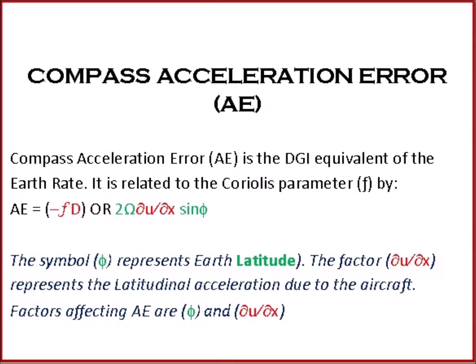The compass acceleration error (AE) is the DGI equivalent of earth rate. It is related to the Coriolis parameter F by: AE = −F·D, or equivalently 2ω · U_dx · sin(φ), where φ represents latitude and U_dx represents the latitudinal acceleration due to the aircraft. The factors affecting AE are: latitude φ and U_dx.